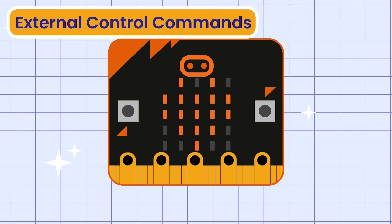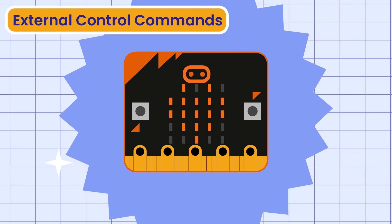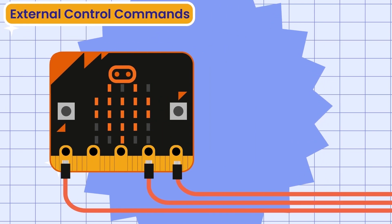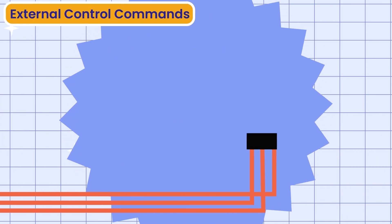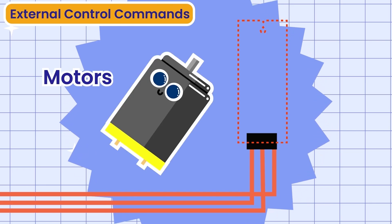External control commands are similar, but they control external components that are connected to the microbit. Some examples are motors and servos.